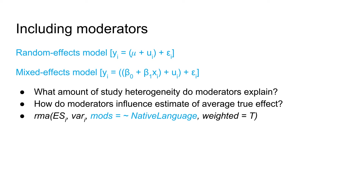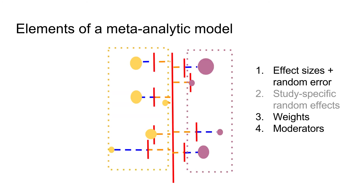After having our base model set up, we can include moderator variables. Now our model is the mixed effects model. We can explore what amount of study heterogeneity — that means variance — the moderators explain and how adding moderators affects the estimate of the average true effect. We have now color-coded effect sizes based on a hypothetical moderator variable.